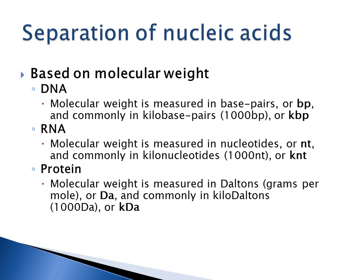Nucleic acids are separated based on molecular weight: DNA molecular weight is measured in base pairs or kilo base pairs, where one kilo base equals 1,000 bases. RNA molecular weight is measured in nucleotides or kilo nucleotides, where 1,000 nucleotides equals one kilo nucleotide. Protein molecular weight is measured in daltons, grams per mole, or kilodaltons, where 1,000 daltons equals one kilodalton.